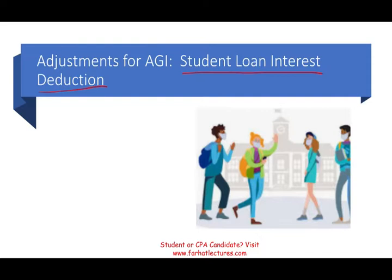What could be other deductions for AGI? Educator expense, IRA deduction, health savings account, self-employment health insurance, deduction for self-employment tax, and other deductions. We're going to look at all of them separately in separate recordings, but today we're going to be focusing on student loan deduction. And it's important to understand it's an adjustment for AGI.